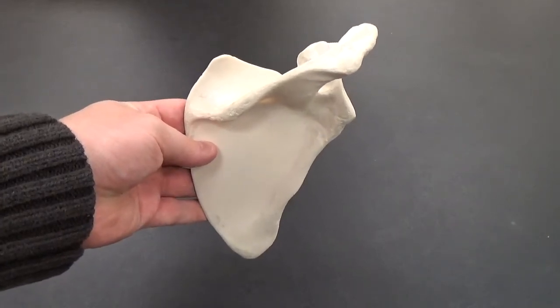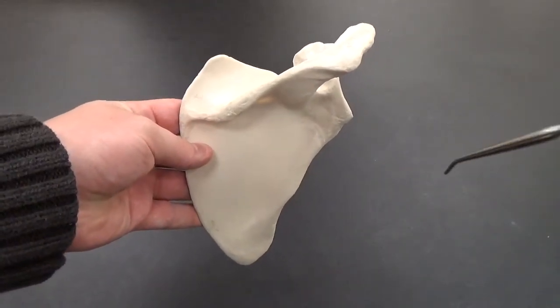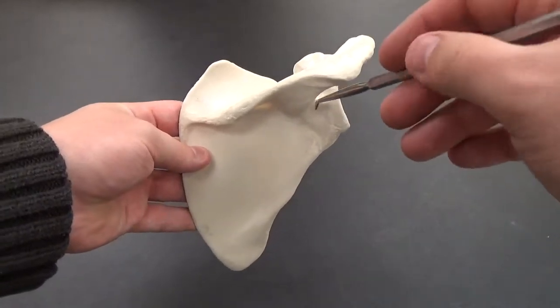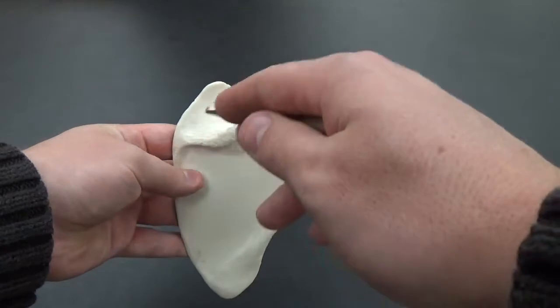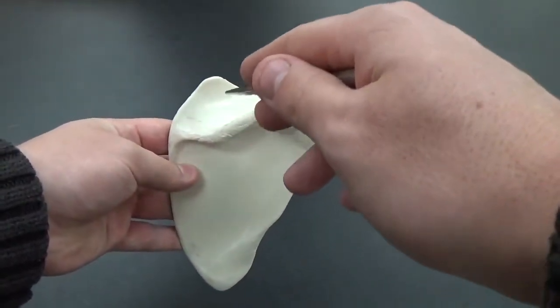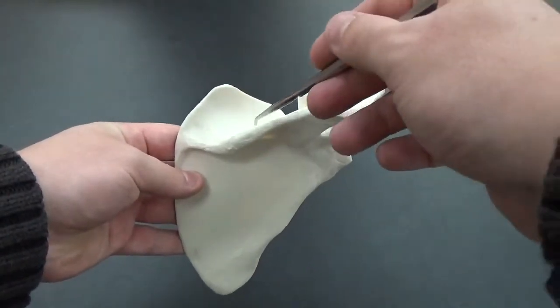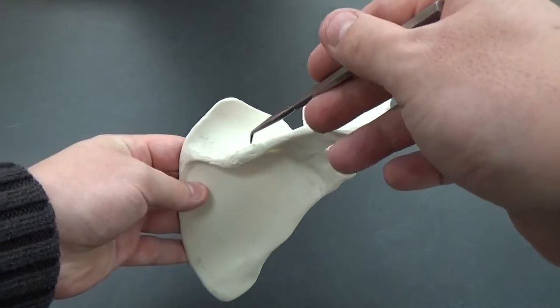Now we're looking at the scapula. The first few things that really poke out at you, literally and figuratively, is the spine here. This pokes out dorsally on the body, towards the back.